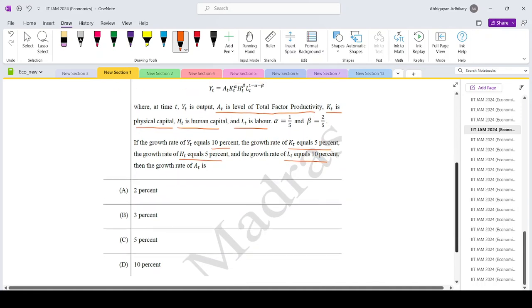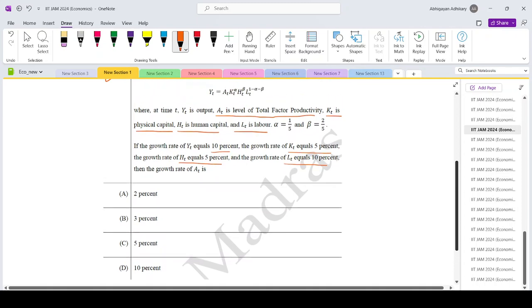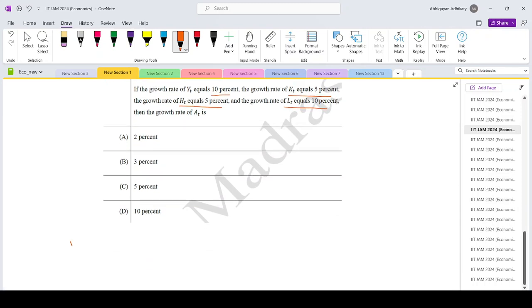Okay, so let's jot down the information first. We are given the production function: y_t equals a_t times k_t to the power alpha times h_t to the power beta times l_t to the power 1 minus alpha minus beta.